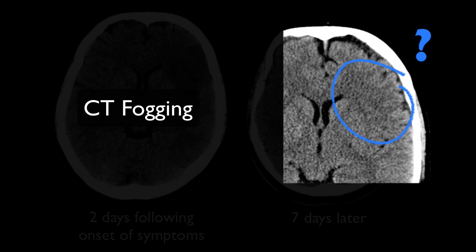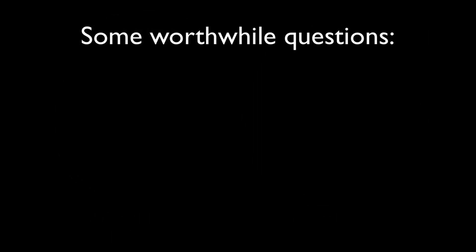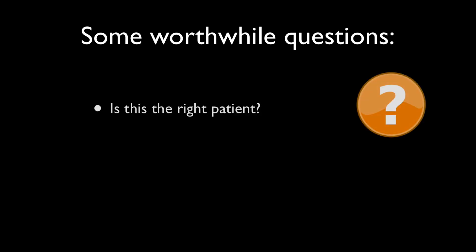Despite this, the patient had not improved. This is a typical timing and appearance of CT fogging. When one sees it, however, it's worthwhile asking a couple of questions. Firstly, is this the right patient? After all, if you were to accidentally scan the wrong patient, then of course it would appear that they had not had an infarct. Another worthwhile question is: are the dates correct? If there has been a much longer delay, or if you're looking at a CT obtained earlier than the stroke, then the appearances would be normal.